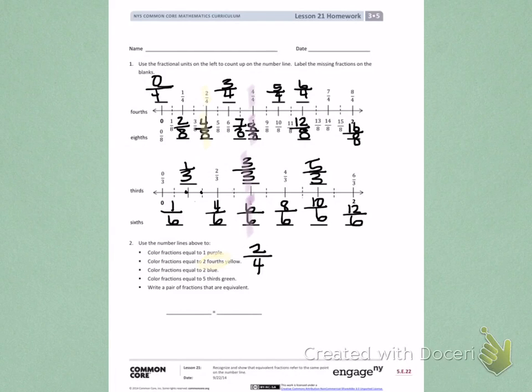Coming back down to the bottom, it says color fractions equal to 2 blue. So, I want to find all of the fractions that are equal to the number 2 and color them blue. So, I'm finding the fractions that are above and below those on the number line. 8 fourths, 16 eighths, 6 thirds, 12 sixths. All of those are equivalent on the number line.